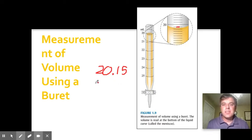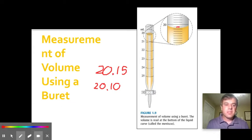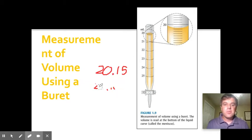Now if you thought that it was exactly on the 20.1 line, then what you would write is not just 20.1, you would write 20.10 because you're estimating that down to the hundredth of a milliliter. That's obviously not the case here, so we're going to call this 20.15.